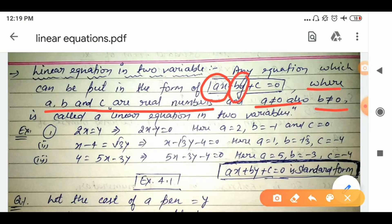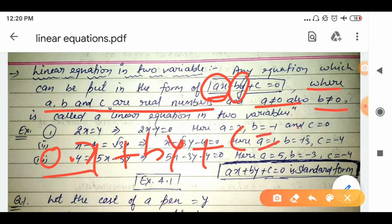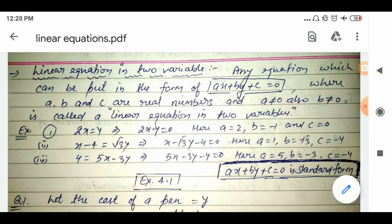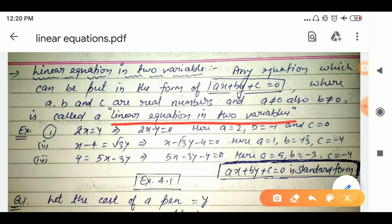In linear equation in two variables, if any one of a or b becomes zero — for example if a's value is zero, then 0·x + by + c = 0, which by the property of zero means we are left with by + c = 0. This represents a linear equation in one variable. So a's value should not be zero and b's value should also not be zero. Any equation that can be put in this form is called a linear equation in two variables.